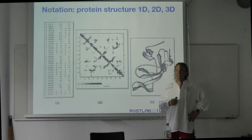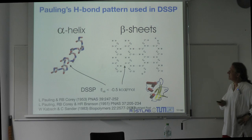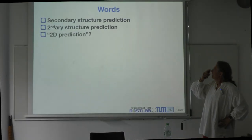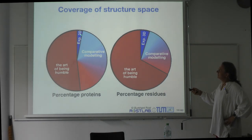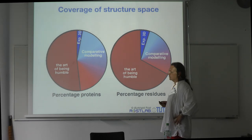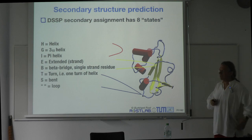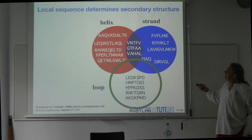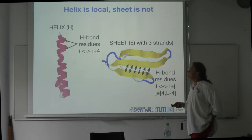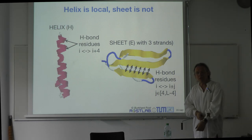Secondary structure in terms of alpha helix and beta strand — that's the way we are going to simplify the problem. Both are stabilized by hydrogen bond formation. It's intrinsically a 1D feature. Comparative modeling can model about half of all the proteins, a little bit less in terms of residues. We are looking at secondary structure from DSSP. Particular peptides are observed in helix, others in strand or loop, and some in both, because secondary structure formation is not only local. Helix is more local than beta strand, but both have some non-local components.